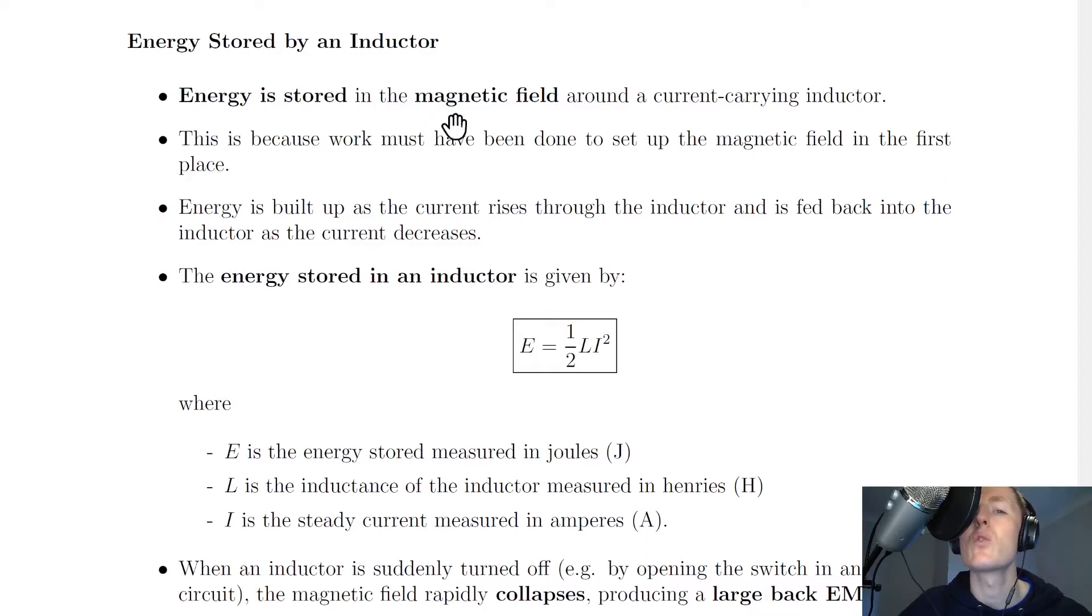However, it's the case that energy is stored in the magnetic field around the current-carrying inductor. This is because work must have been done to set up the magnetic field in the first place. Energy is built up as the current rises through the inductor and is fed back into the inductor as the current decreases.